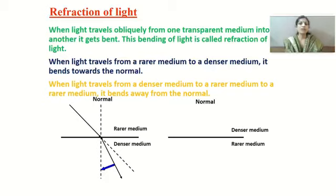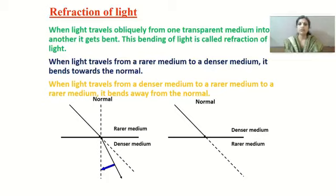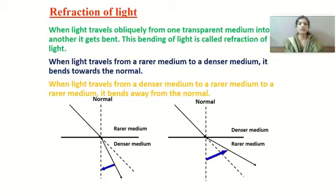When light travels from denser medium to rarer medium, it bends away from the normal. If light would have traveled only in one medium it would have traveled straight, but because light is traveling from denser to rarer medium, it bends away from the normal. These two rules you have to keep in mind.